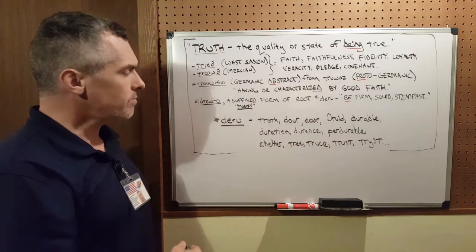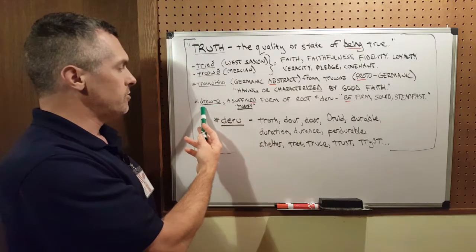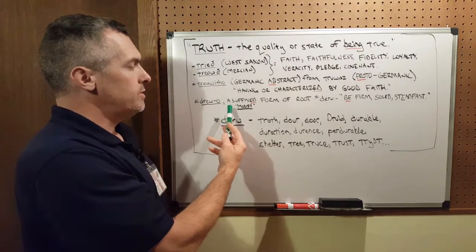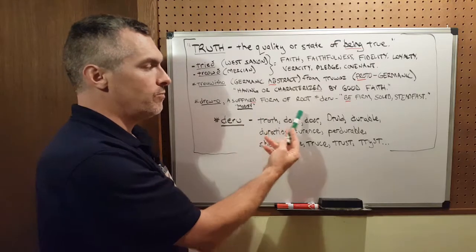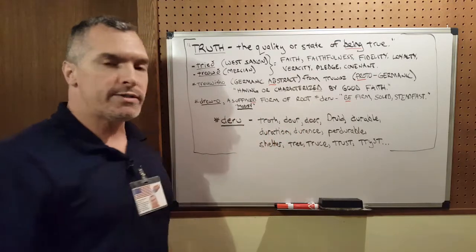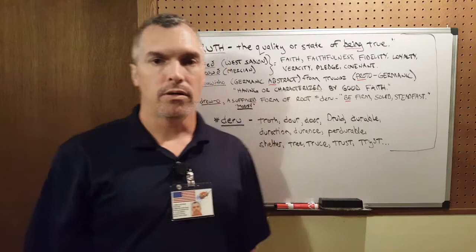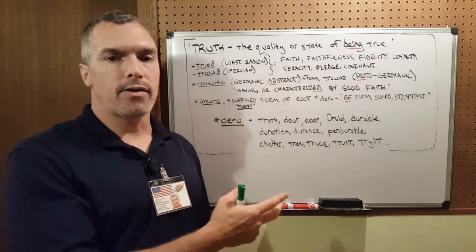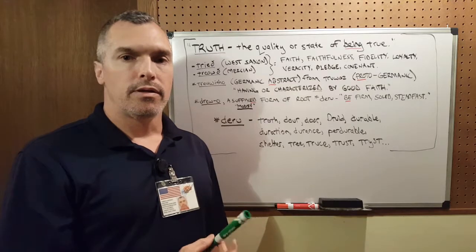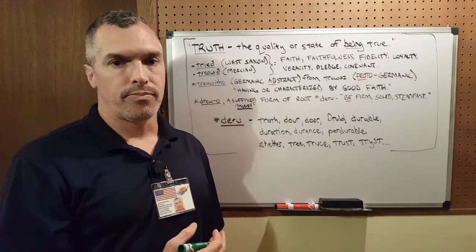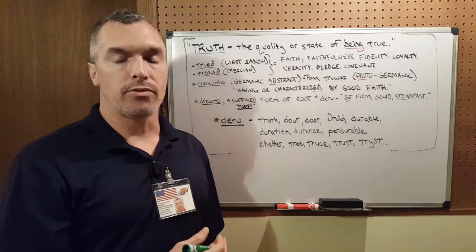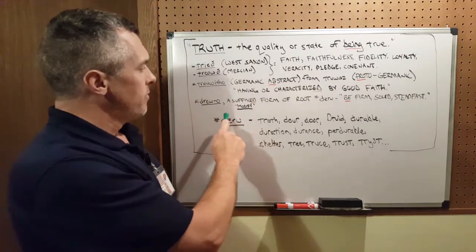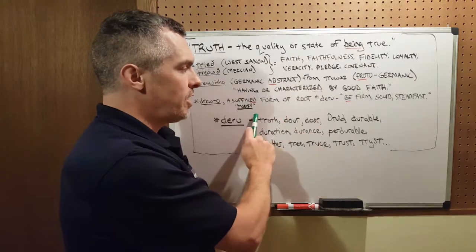That came from the word drew-o, which is a suffixed form of a root. What is a suffixed form? A suffix is something they tack on to the end of a word that modifies the word. In other words, the word is no longer the word—they've changed it.